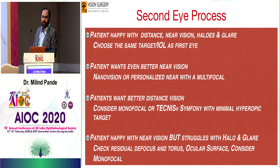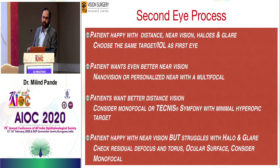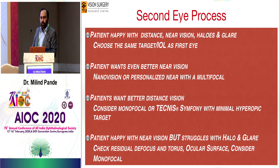If the patient wants even better near vision and is happy with distance and tolerates glare and halos, you either add half a diopter or one diopter of myopia in the second eye, or personalize it with a multifocal lens with more near vision performance. If the patient wants better distance vision — say they ended up half a diopter myopic — I would consider a monofocal or EDOF lens in the second eye. If the patient is happy with near but struggles with halos and glare and is concerned about night driving, and there's no significant defocus or toris, I use a monofocal for the second eye.